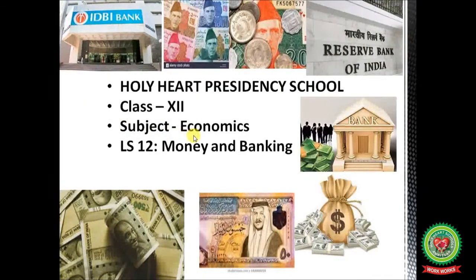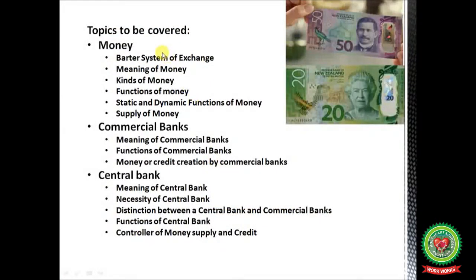Hello students, welcome back to the economics class of Plus 2 standard. Today we will start with new lesson 12: Money and Banking. In this chapter you will learn about the barter system of exchange, meaning of money, kinds of money, functions of money, static and dynamic functions, money supply, and the commercial bank — its meaning, function, and credit creation.